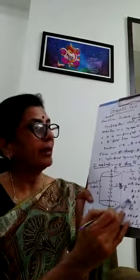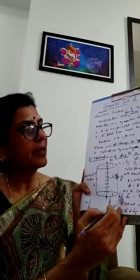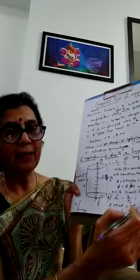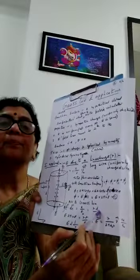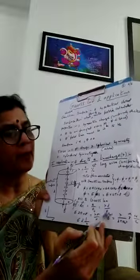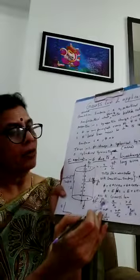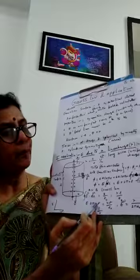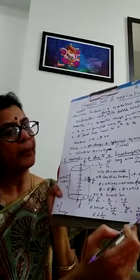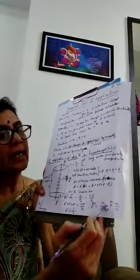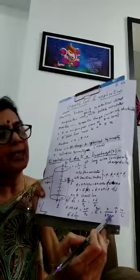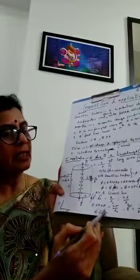According to Gauss's theorem, ∮ E · dS = q/ε₀. Here, q = λl, since linear charge density is defined as charge per unit length, so λ = q/l or q = λl. Substituting: E × 2πrl = λl/ε₀. The l cancels on both sides, so we get E = λ / (2πε₀r). In vector form, we write E = (λ / 2πε₀r) r̂, where r̂ is the unit vector. Thus E is inversely proportional to r.